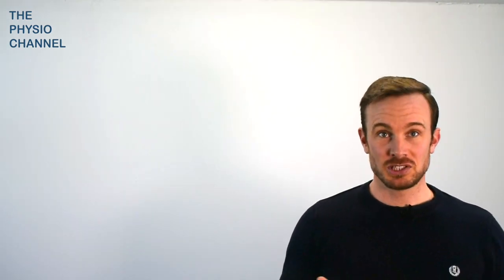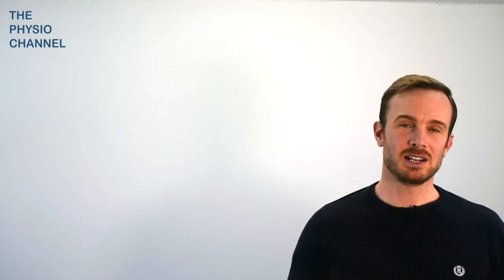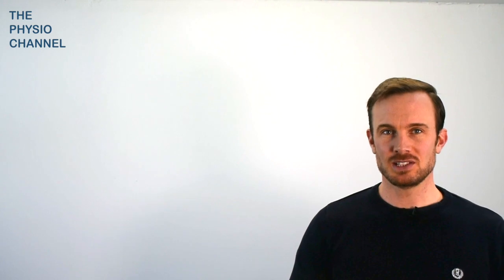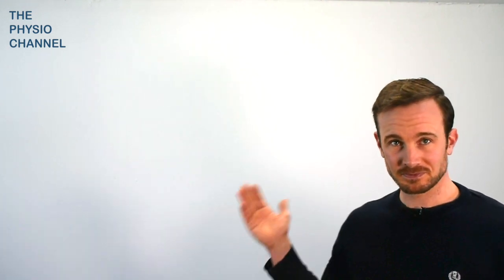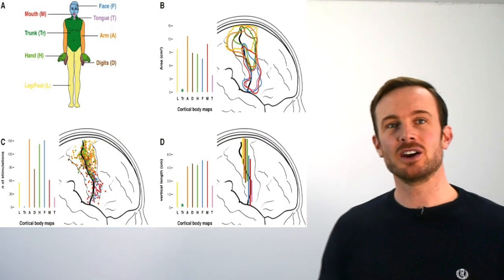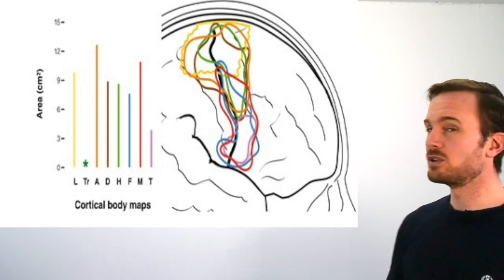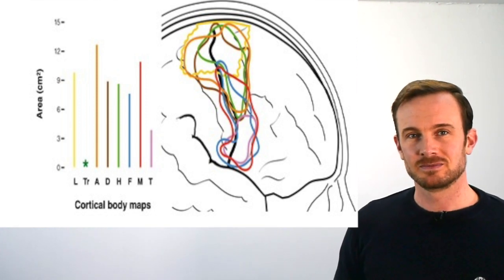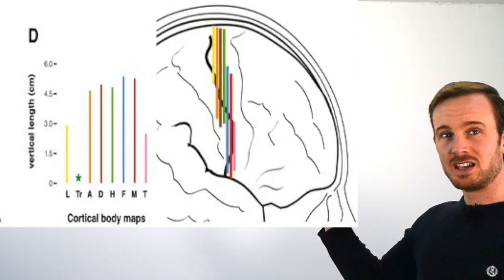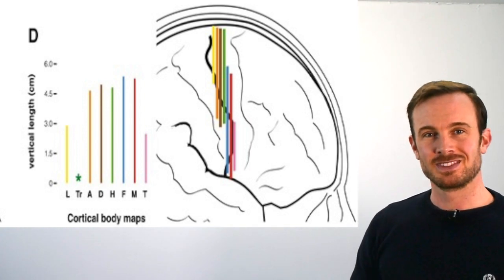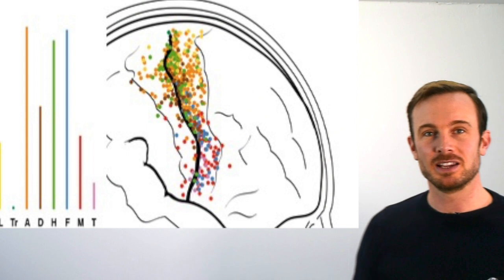The somatosensory homunculus was generated from 170 stimulation point maps indicating the number and location of the stimulation points for each body part. These were then color coded. Have a look at the images shown here. Here the points are plotted in enclosed body region outlines. And on this one here they're shown in a vertical length distribution and in this one simply by location.